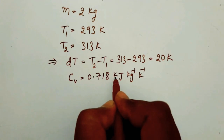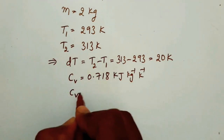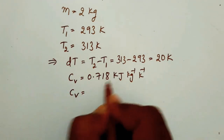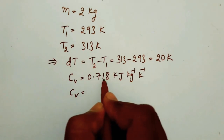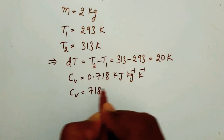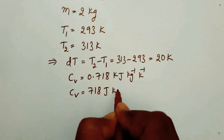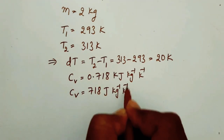Cv is equal to 0.718 kJ per kg per Kelvin. Here kilo is equal to 1000, so it can be written as Cv is equal to 0.718 kJ per Kelvin.